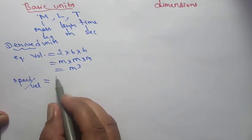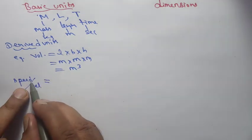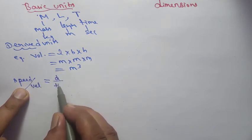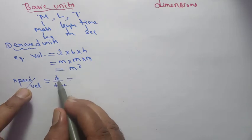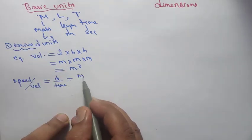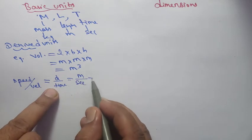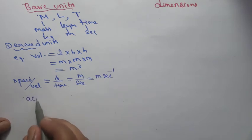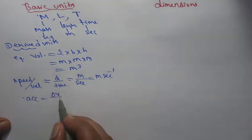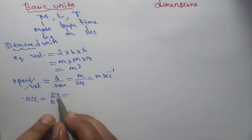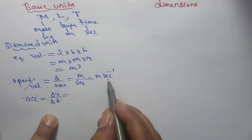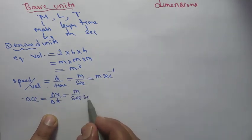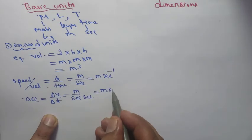Speed = distance upon time. Distance is in meters, time is in seconds, so speed = meter per second = m s⁻¹. Acceleration = change in velocity per unit time. Velocity is in m/s, time is in seconds, so acceleration = m s⁻².